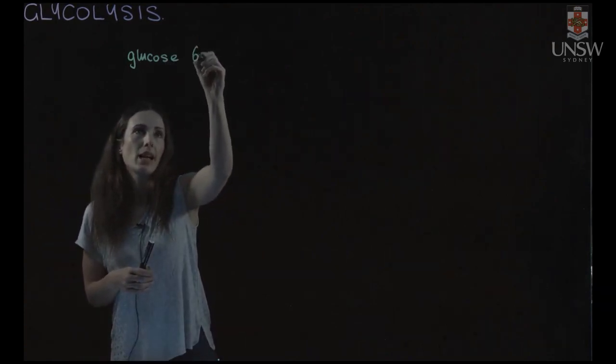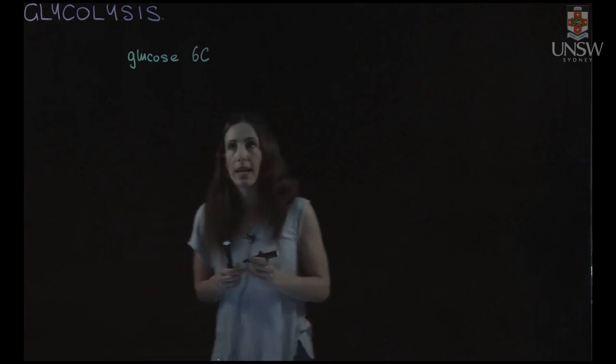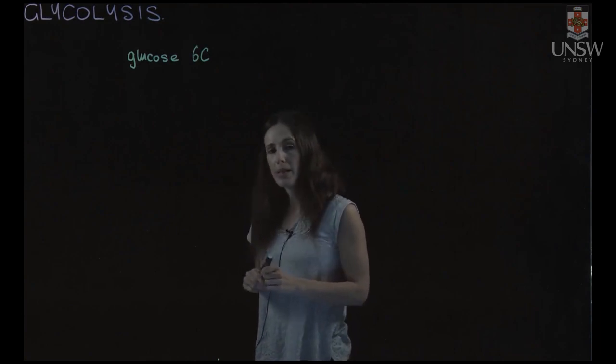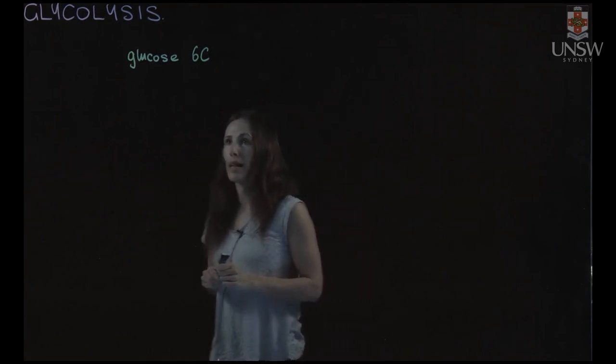Now glucose is a six carbon sugar and it's getting oxidized in this process. There's 10 steps in glycolysis but we're just going to think of it in two parts at the moment.